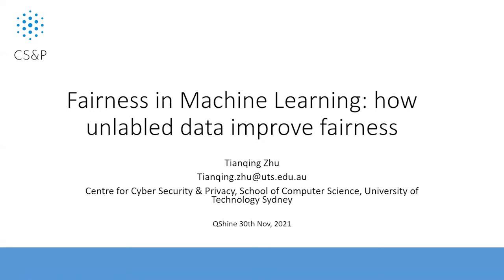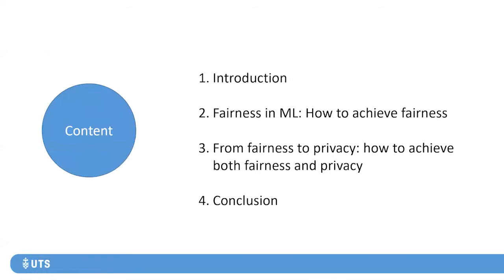Today's talk is about fairness in machine learning. I've reduced the title slightly — the previous title was too long. It was about how unlabeled data can be used to improve the fairness of machine learning. I have two topics to share. The first is how to achieve fairness, and the second is how to achieve both fairness and privacy.